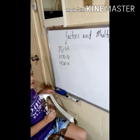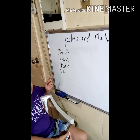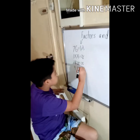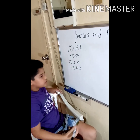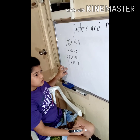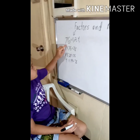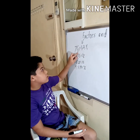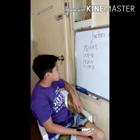4 is also a factor. 38 divided by 2 is 19, and 4 times 19 equals 76. 5 cannot be a factor because the last digit is not a 0 or a 5. As for 6: 7 plus 6 is 13, and 13 is not divisible by 3, so 6 cannot be used.